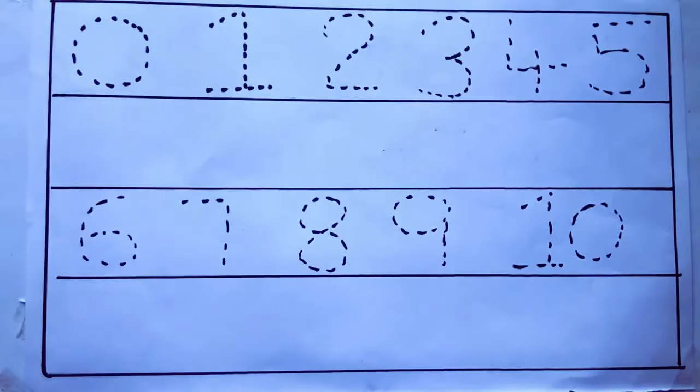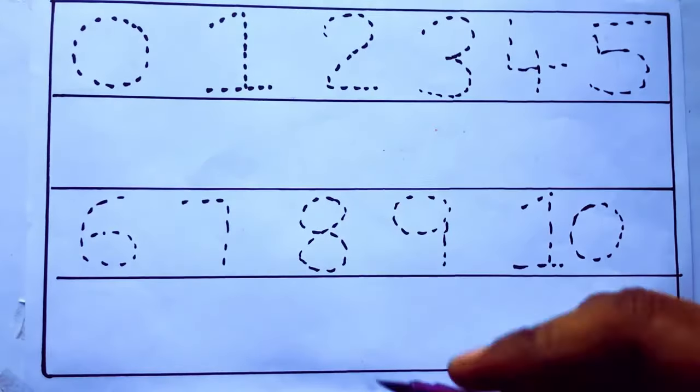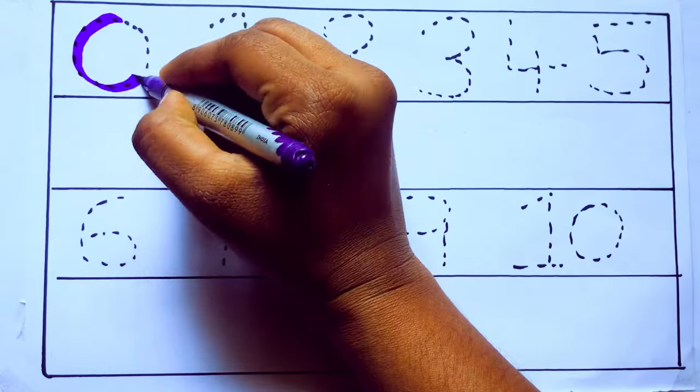Let's draw numbers. Violet color 0. Z-E-R-O.